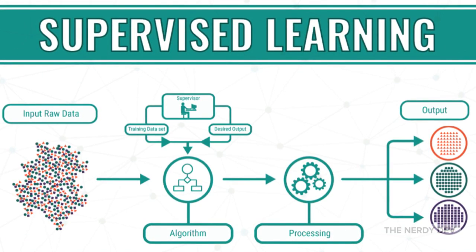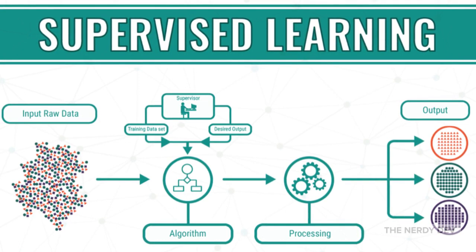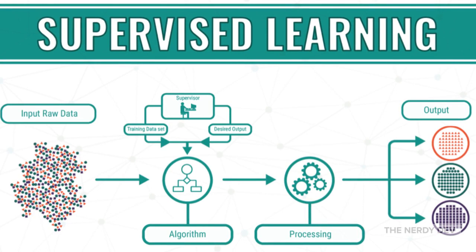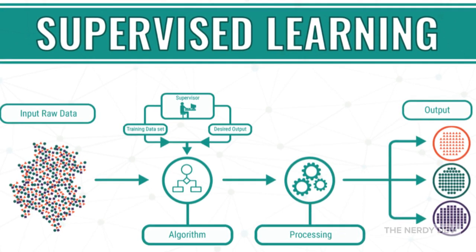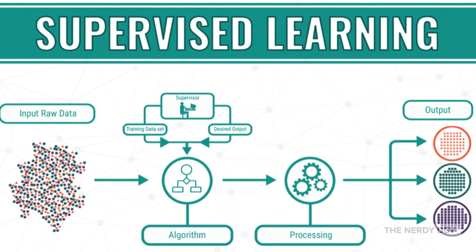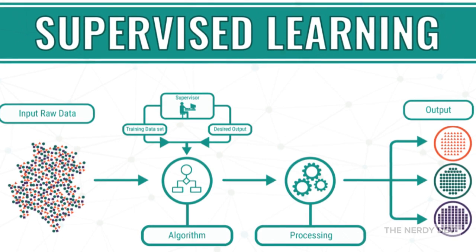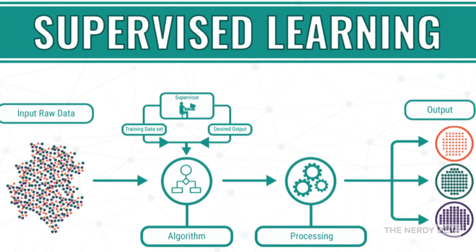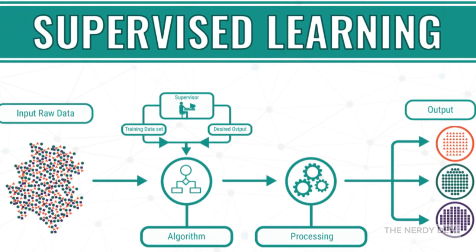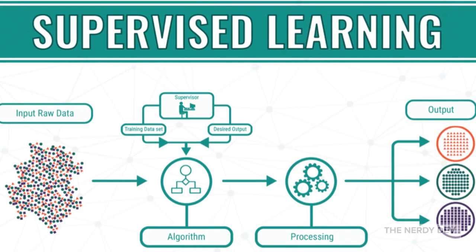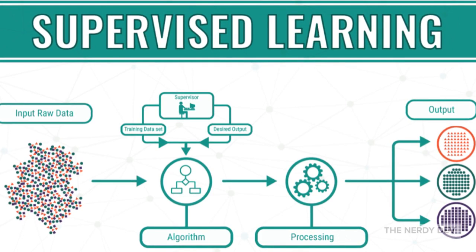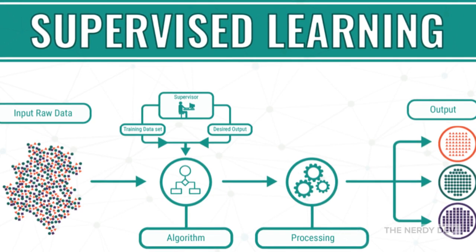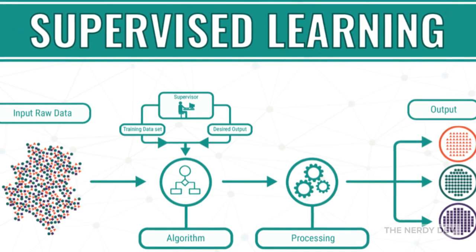Once the model is done with its learning, it builds some logic and intuition of its own. Once ready, it is tested in an environment unlike the one it was trained on. At the time of testing, input is fed from the remaining testing data — your 20% or 40% — which the model has never seen before. The model builds statistical power of prediction and predicts the value, thereby improving the performance of your machine learning model.